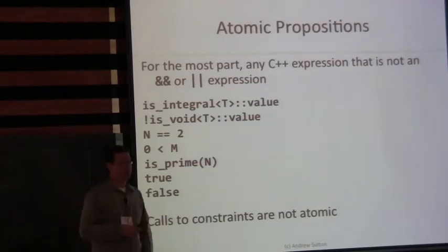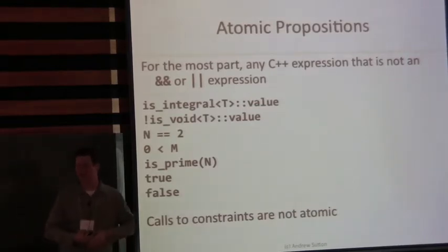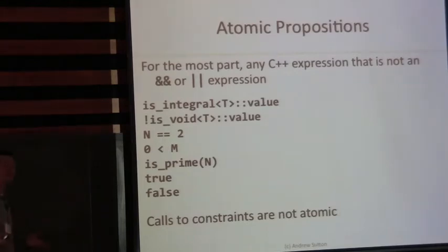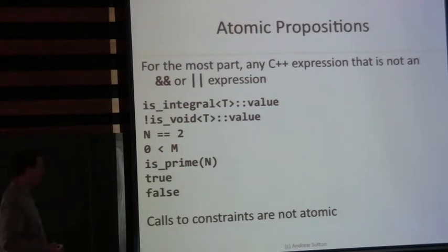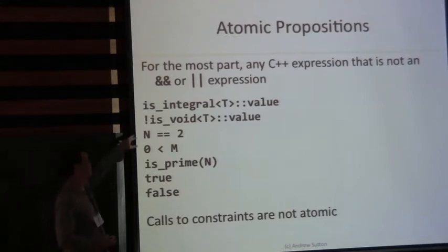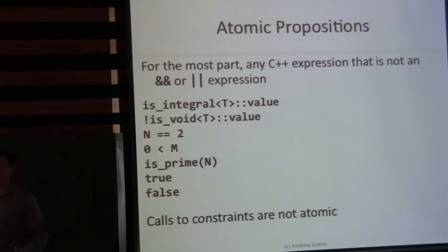For the most part, any expression in C++ is going to be atomic — we have no deeper propositional or logical structure associated with C++ expressions. I'm not trying to reason about the meaning of these expressions; they're just things that return true or false. So things like type trait evaluations — is_integral<T>::value — are just true or false. Negation is also primitive, treated as an atomic expression. Constexpr functions also return true or false. Calls to things declared concept, however, are not atomic — we actually reduce those, essentially inlining them.